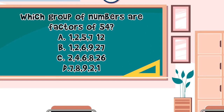Number 1: Which group of numbers are factors of 54? Letter A: 1, 2, 5, 7, and 12. Letter B: 1, 2, 6, 9, and 27. Letter C: 2, 4, 6, 8, and 26. Letter D: 7, 8, 9, 2, and 1. Timer starts now.